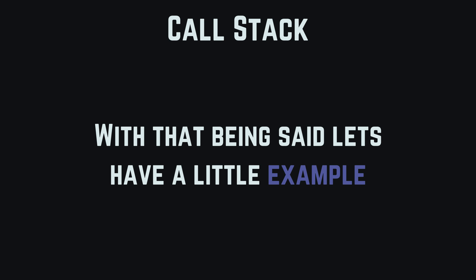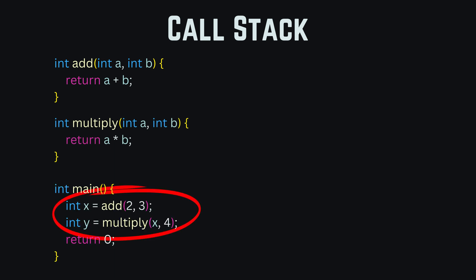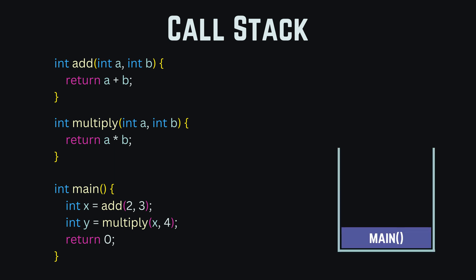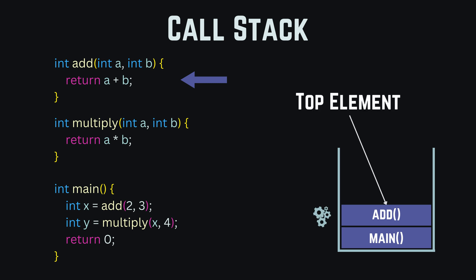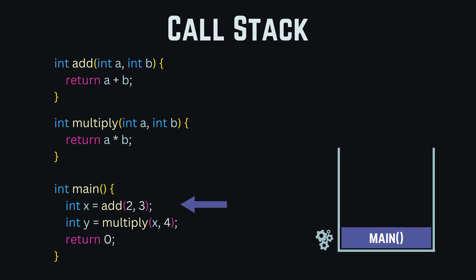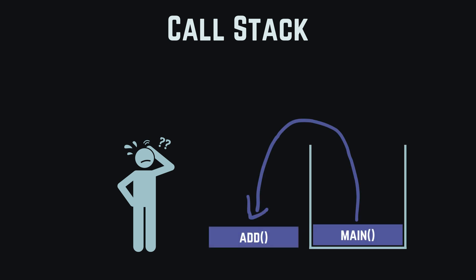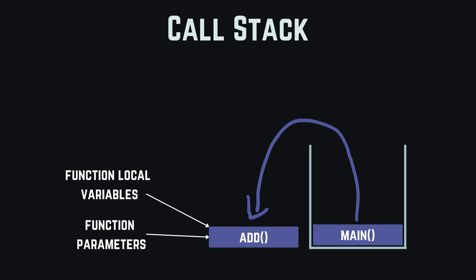Let's have a little example. We can see we have an add function and a multiply function, and both of these get executed in our main function. When our program gets run, our main function gets pushed onto the call stack and starts getting processed. We then come across the add function, which gets pushed onto the call stack as well. The consequence is we stop processing main and now process the add function, because it is the top element of the stack. After we've finished our add function with our return, we remove it from the call stack, and the return value gets passed to our integer x.